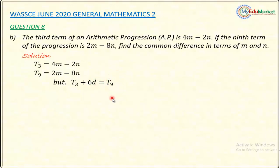So, if I continue substituting here, I have term number 3 as 4M minus 2N, then plus this 6D. This will equal term number 9, which is 2M minus 8N.